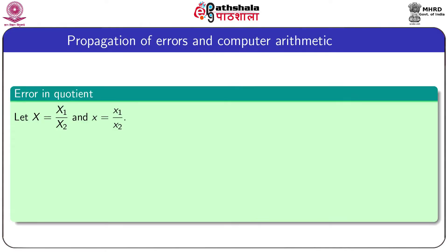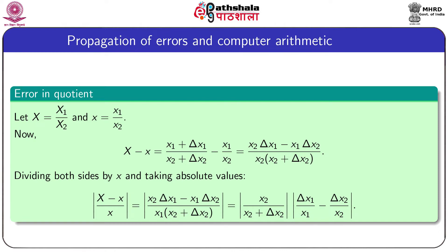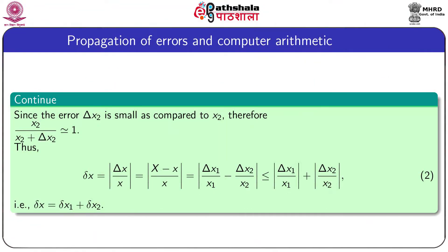Now consider the quotient of two numbers. Capital X represents the quotient of two exact numbers X1 and X2, and small x represents the approximation of the quotient of the two approximate numbers. The absolute error is given by an expression which is then divided by the approximate number small x. After simplification, the first term in the last expression is approximately equal to 1. Therefore, the relative error in the quotient equals the sum of the individual relative errors in x1 and x2.